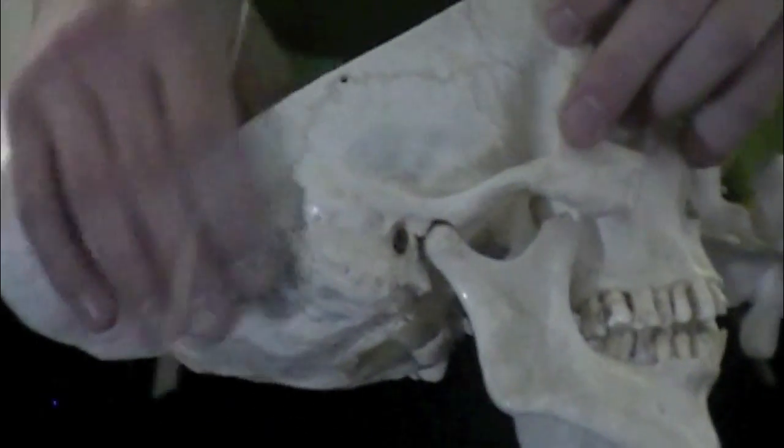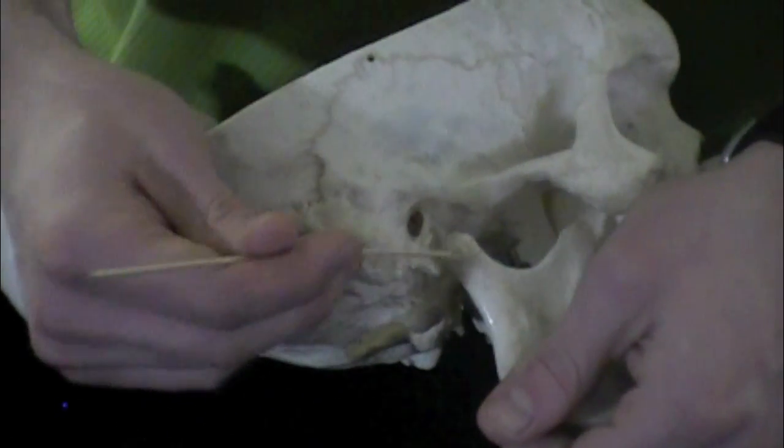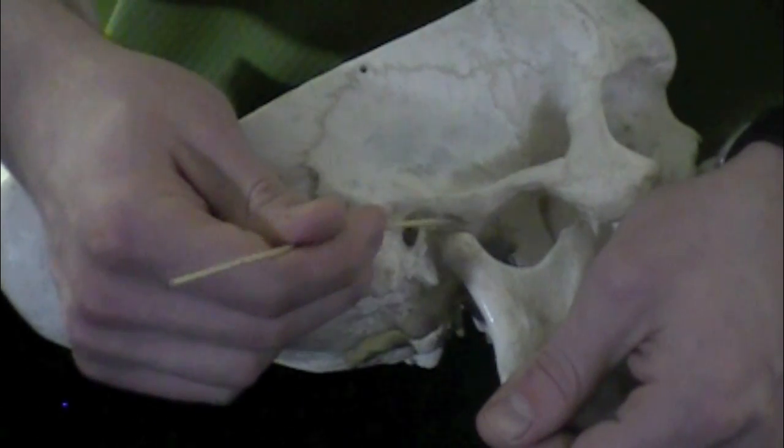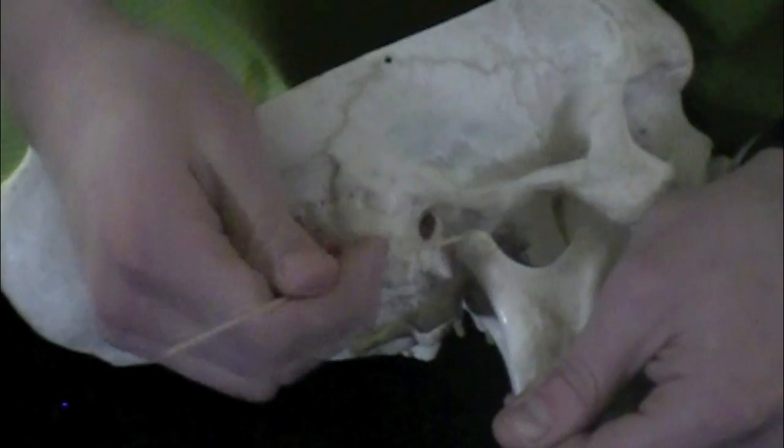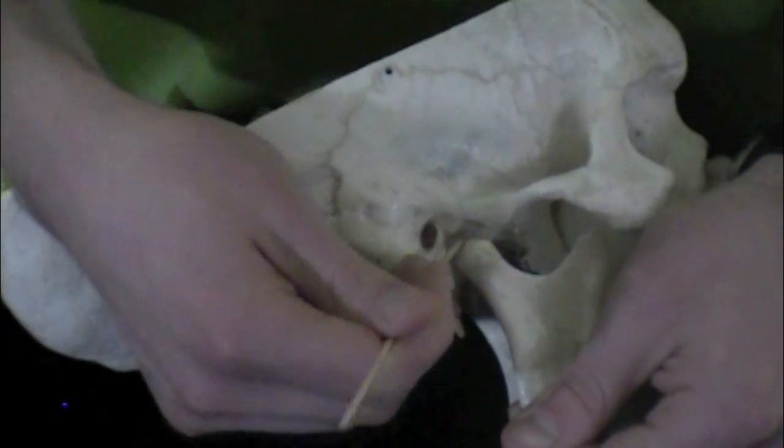Coming over here on the skull, we're going to have the articular disc for the temporomandibular joint. It's going to sit right up there between that coronoid process and this fossa up here.